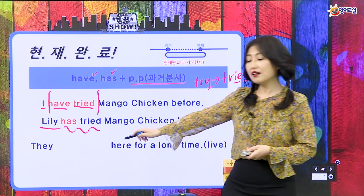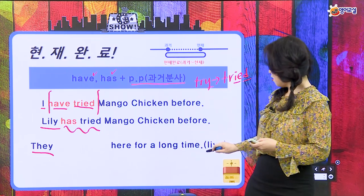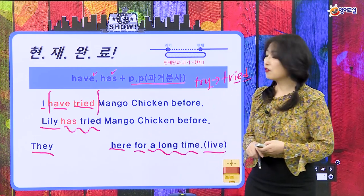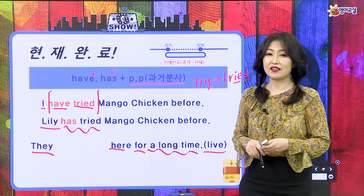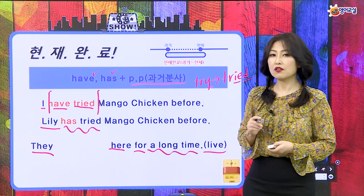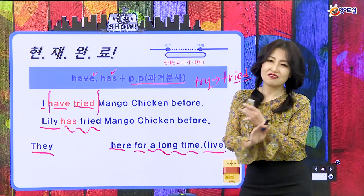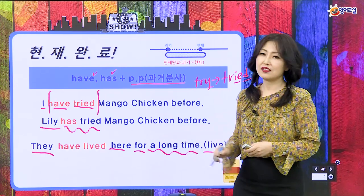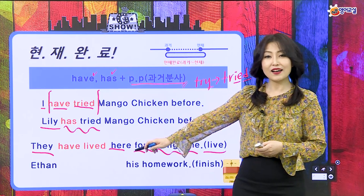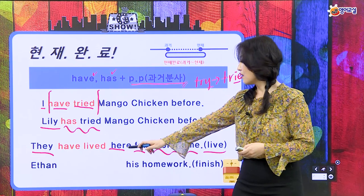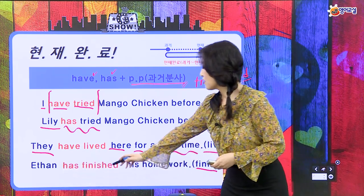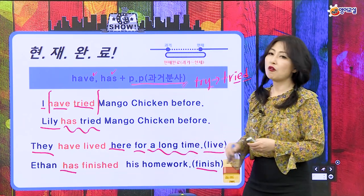다음은 they가 왔네요. They have lived here for a long time. 사람이 사는 거는 언젠가 과거에서 시작해서 쭉 지금까지 살고 있는 거잖아요. 그래서 현재 완료 시제를 사용하는 거예요. they는 복수니까 have가 와서 have lived가 되는 거예요. 다음은 Ethan인데 남자아이 이름이에요. 주어가 3인칭 단수니까 Ethan has finished his homework이 되는 거예요.